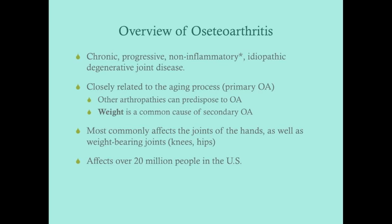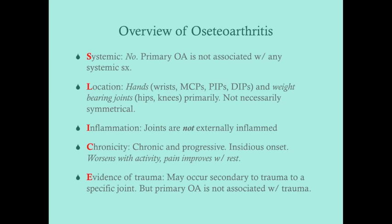Breaking osteoarthritis down: it is not systemic — primary osteoarthritis is not associated with any systemic symptoms. The primary locations are the hands and weight-bearing joints. In the hands, it can affect any joint — the wrist, metacarpophalangeals, proximal interphalangeals, and distal interphalangeals. Unlike rheumatoid arthritis, which spares the distal interphalangeals, osteoarthritis affects all hand joints. The primary weight-bearing joints affected are the hips and knees. Osteoarthritis does not have to be symmetrical, though it may be.